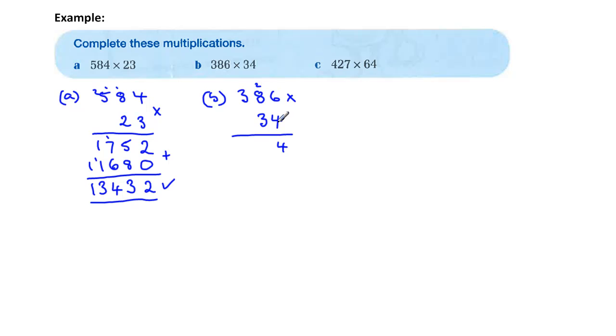Four eights, 32. Plus the two, 34. Three fours are 12. Plus three, 15. So there's our top number.